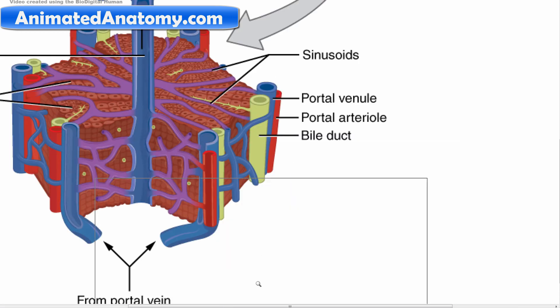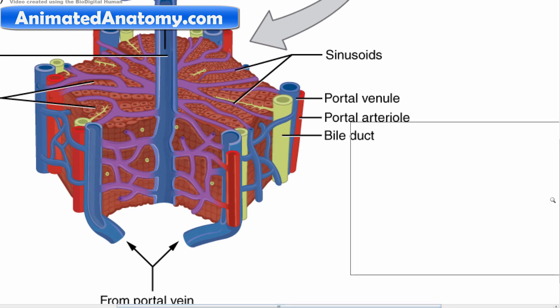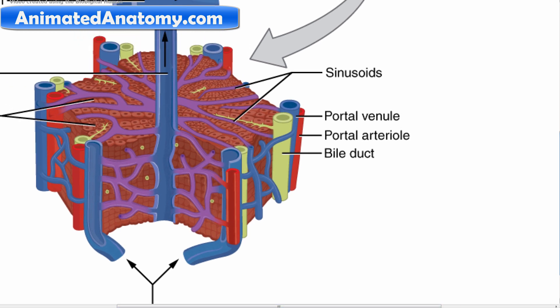Now I will zoom in a little bit to show you one more component of the lobule, and that component is the portal triad. The portal triad can be found running along each of the lobule's corners — and remember, because the lobule has a hexagonal shape, that means we have six corners.